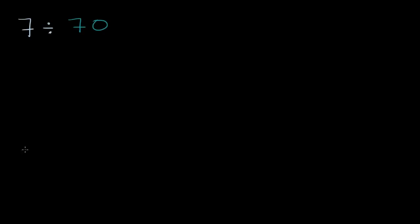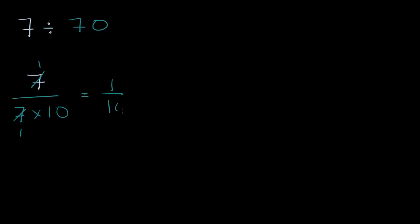Let's do one more example. Let's figure out what seven divided by 70 is. We can rewrite this as seven over 70. Instead of writing it as 70, let me write that as seven times 10. We can divide the numerator and denominator by seven — we get one over 10. Remember, we can do the same thing to the numerator and denominator without changing the value of the fraction. So you're left with one tenth, which expressed as a decimal is 0.1.